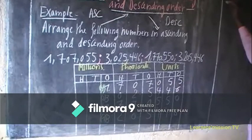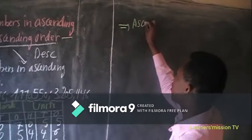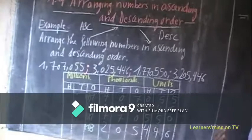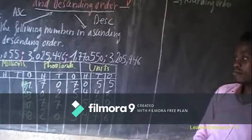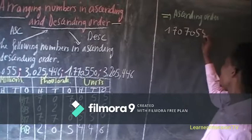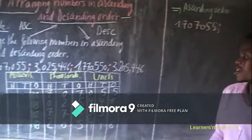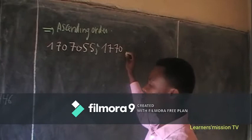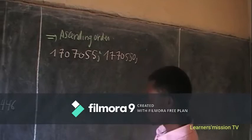Let us arrange in ascending order. Ascending order is arranging numbers from the smallest to the highest. The smallest there is number four: 1,770,755. This is the first one. The next is number three: 3,177,055. Then number two: 3,445,242.